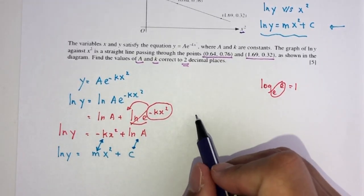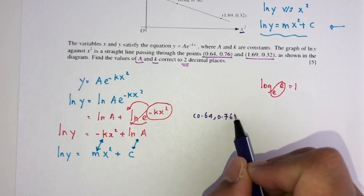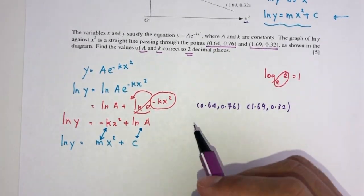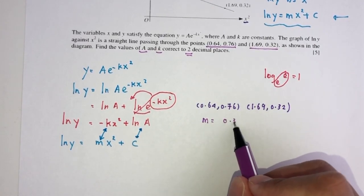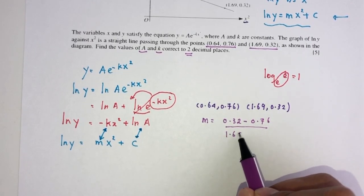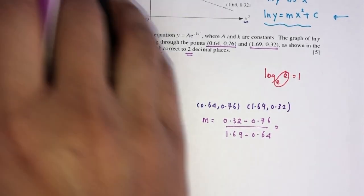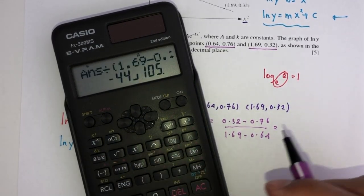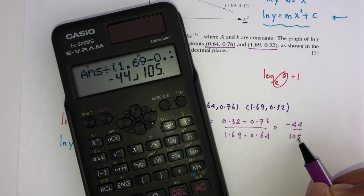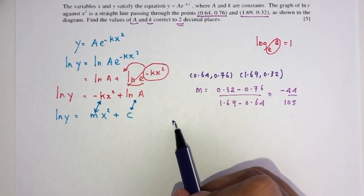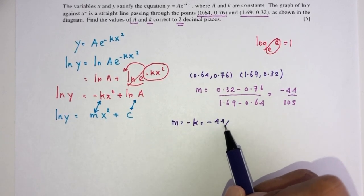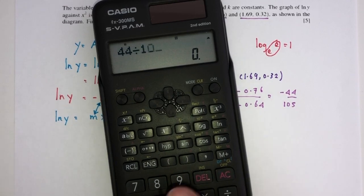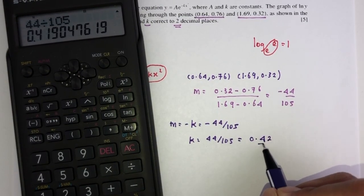To find the gradient, we use the two passing points. The gradient equals (0.32 minus 0.76) divided by (1.69 minus 0.64), which is minus 44 over 105. Since m equals minus k, we have minus k equals minus 44 over 105, so k equals 44 over 105, which correct to two decimal places is 0.42.